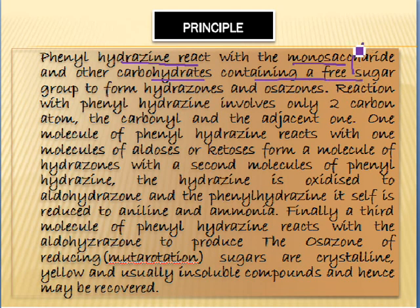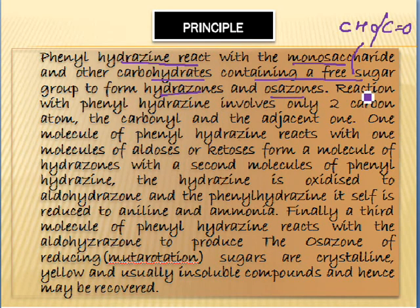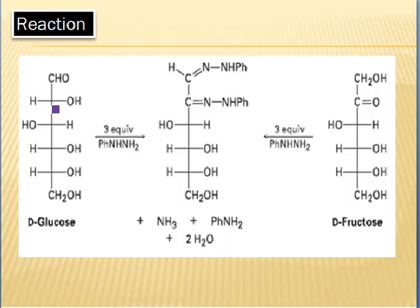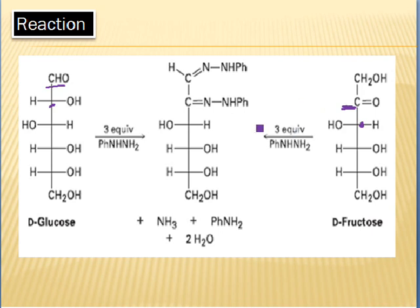In this reaction, phenyl hydrazine involves only two carbon atoms: one is the carbonyl carbon, that is the aldehyde or ketonic group, and the other is the adjacent carbon atom to the aldehyde or ketonic carbon. One molecule of phenyl hydrazine reacts with one molecule of aldoses to form a molecule of hydrazone.